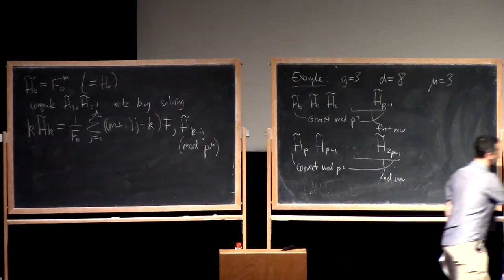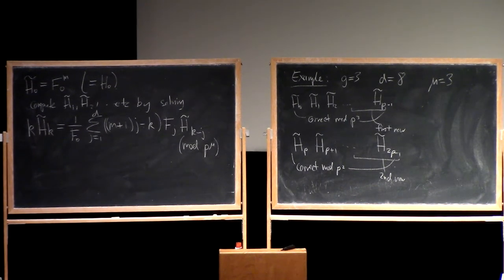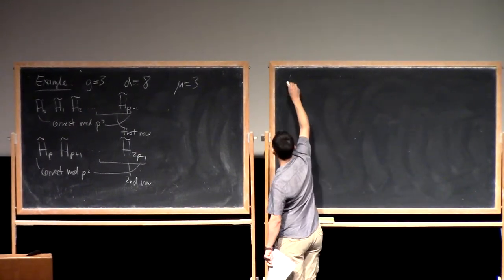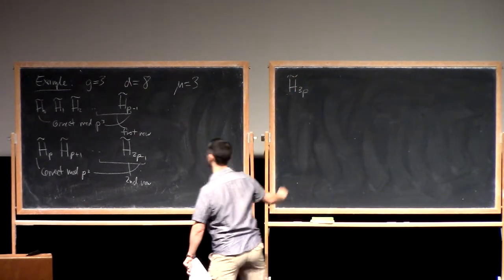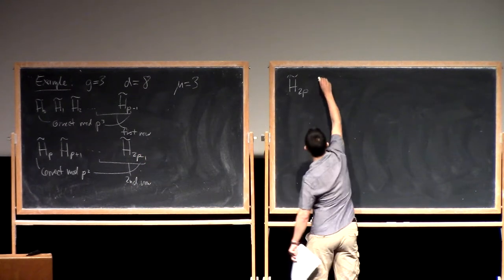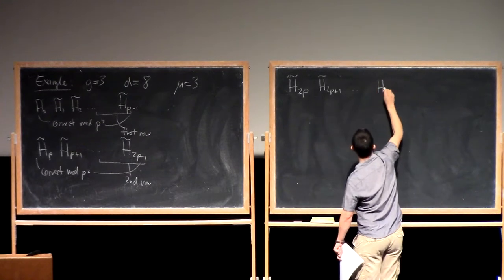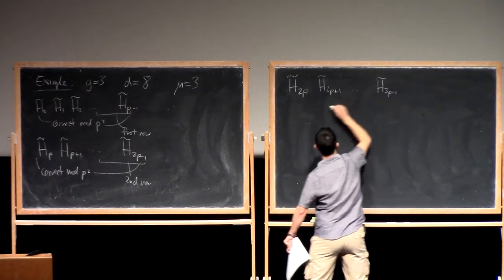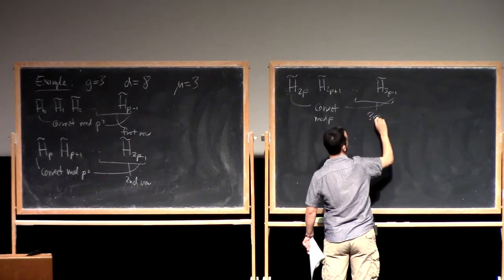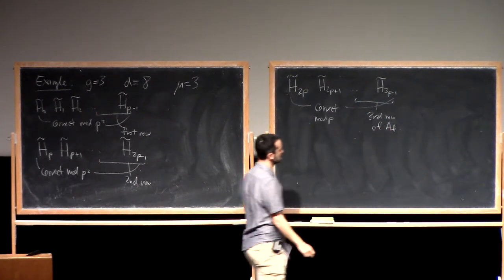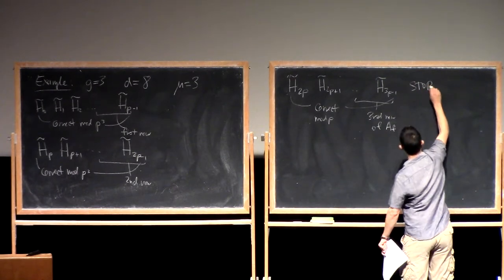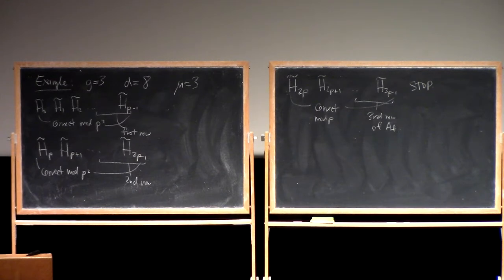For the third row we reach H_{3p}, divide by p again, and we're only correct modulo p. Continuing through H̃_{3p-1}, these are correct modulo p, giving us the third row. Since genus is 3, that's why I chose μ = 3 — so all three rows are correct modulo p. We don't need to go any further; going up to H_{4p} would give random garbage.